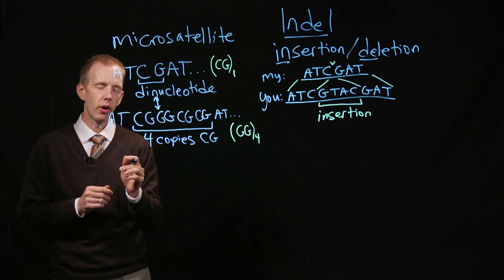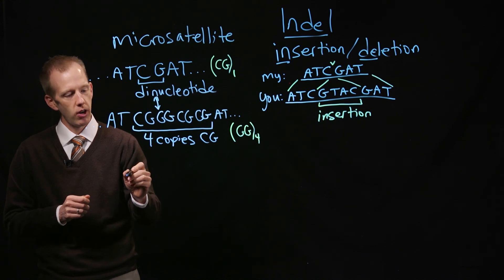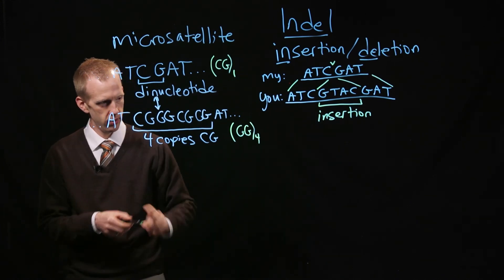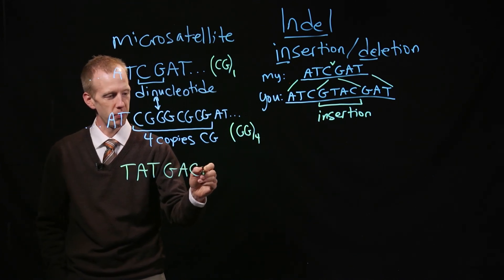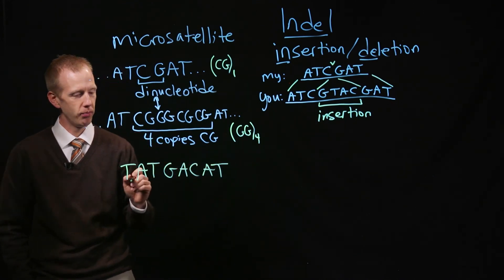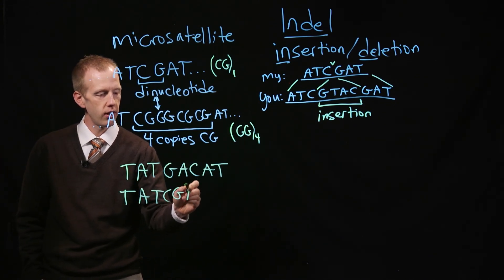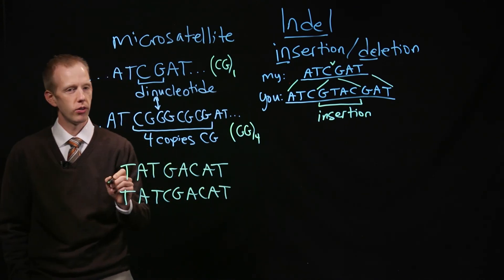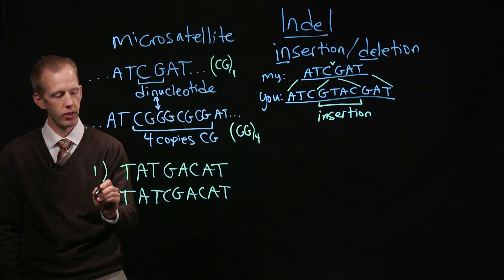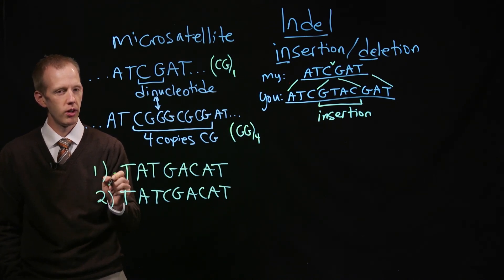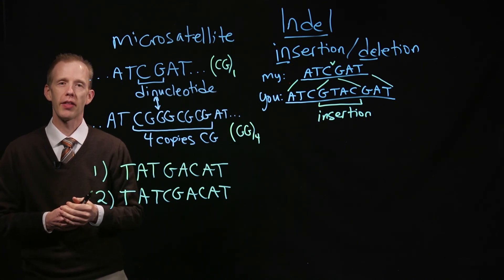In conclusion, what I'd like you to do and think about for the next class is to consider the following pair of chromosomes. So here's a sequence, again, I'm just making up at random. And I'd like you to classify whether or not this is an indel mutation, or is this a single nucleotide polymorphism or SNP. So here's chromosome 1, there's chromosome 2. Look at the different chromosome sequences and then tell me, is this a SNP or is this an indel? We'll talk about that in class.